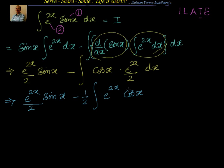Now if you observe, we started with the integral of e power 2x sin x and we end up with the integral of e power 2x cos x. Shall we do one more integration by parts? Then we should get again part of whatever we started with. Suppose this is i — we may get i by 2 or i by 4 — then we take it to the left hand side and we can simplify that. Let me explain what I am trying to do after a couple of steps.